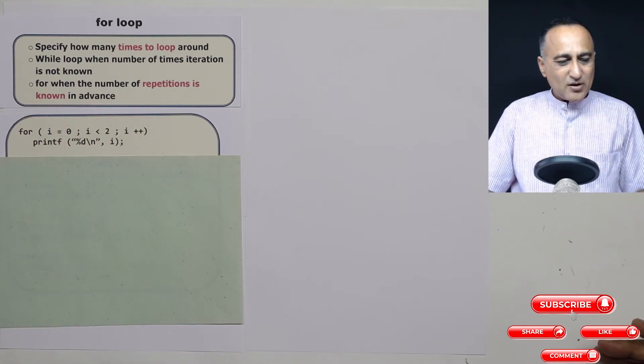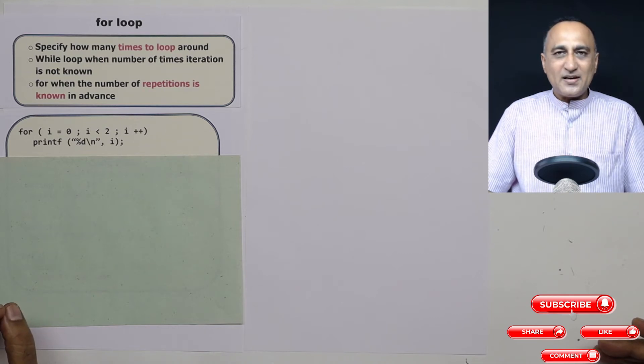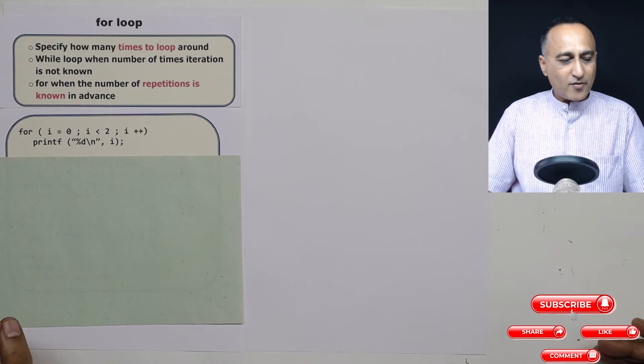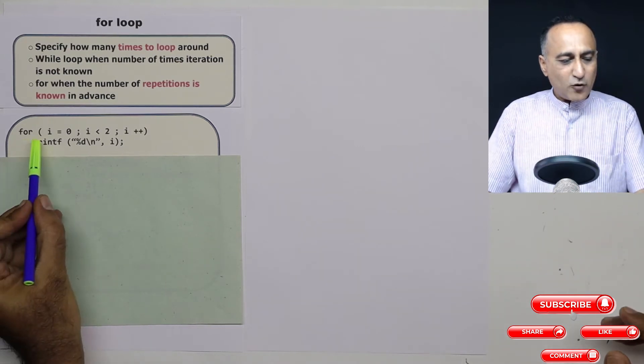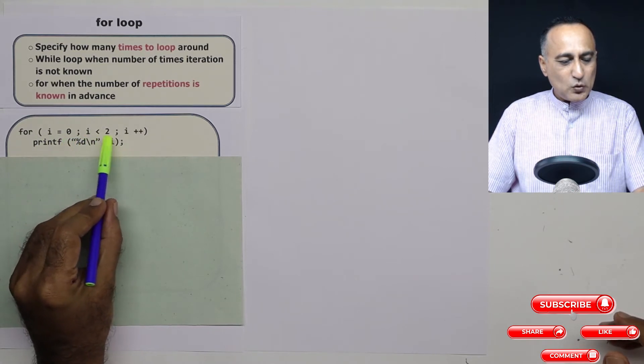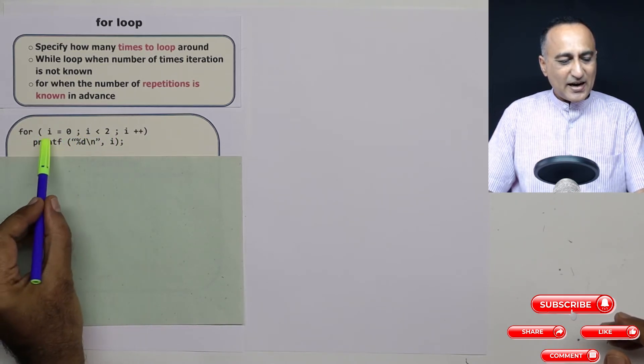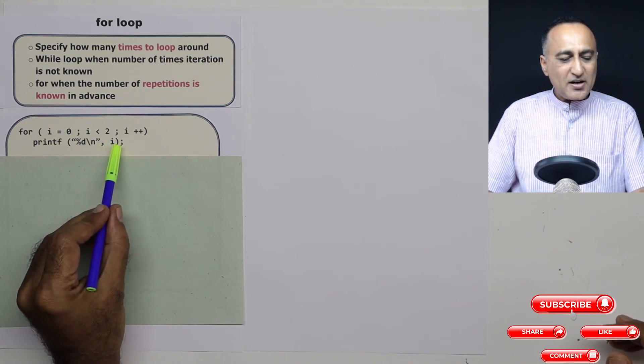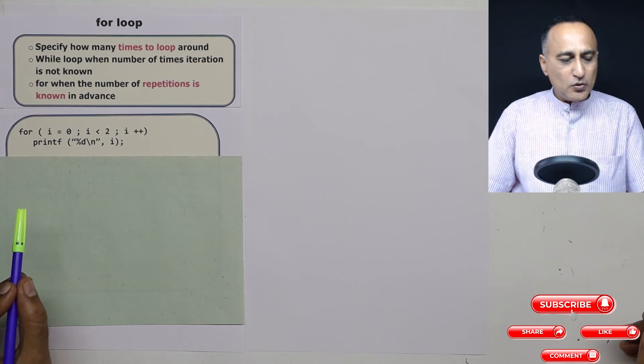So let's take a simple example to understand how the for loop works through a code flow or a code trace. So here what I have done is I have set for i is assigned the value zero, i is less than two, i plus plus and printf percentage d i. So it's going to print zero and one.